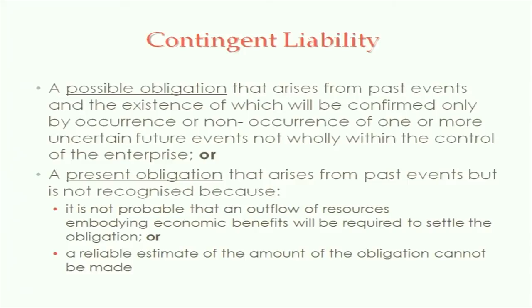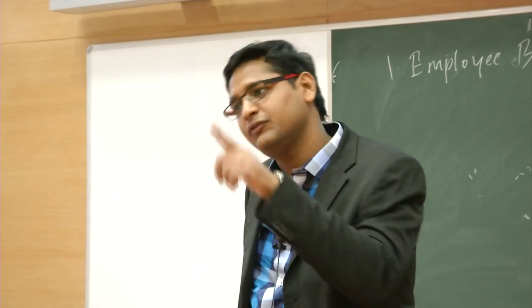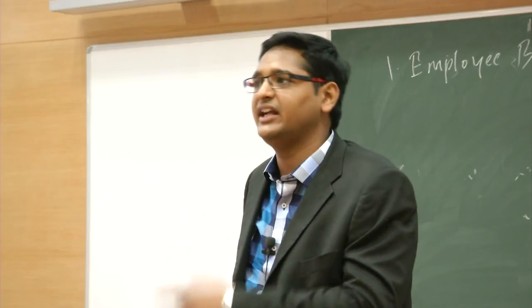Contingent liability: there can be two things — possible obligation or present obligation. A possible obligation arises from past events and its existence will be confirmed only by the occurrence or non-occurrence of one or more uncertain future events not wholly within the control of the enterprise. There is a possible obligation which might arise in future, depending on the happening or not happening of a future event that is not in my control.